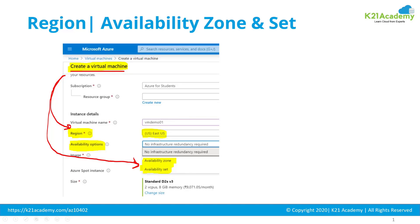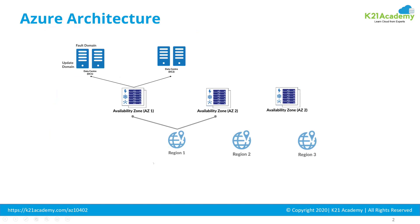US East, for example, has multiple availability zones, and that's why you get the option of availability zone there. Multiple availability zones make a region. Multiple regions make a geography — for example, within India there are multiple regions such as South India and West India. Similarly, the US has multiple regions and Europe has multiple regions.